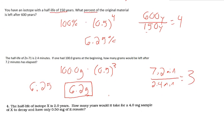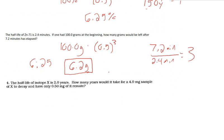And if you need more help on that, view the video on significant figures and rounding significant figures. Finally, the half-life of isotope X is 2.0 years. How many years would it take for a 4.0 milligram sample of X to decay and have only 0.50 milligrams to remain?